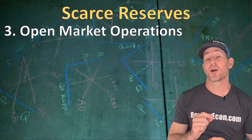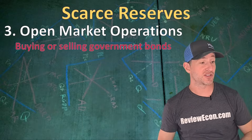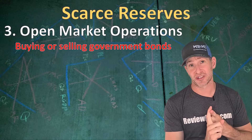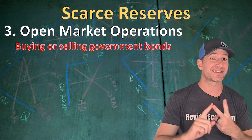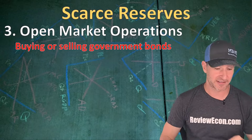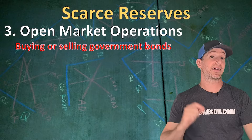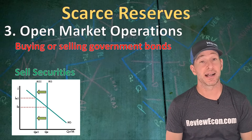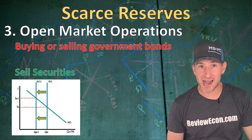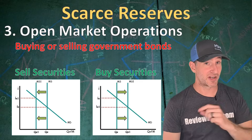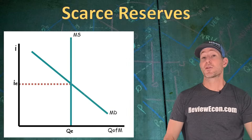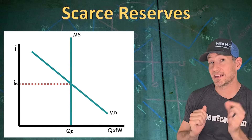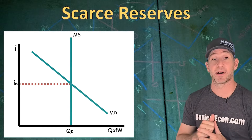Third, we have open market operations — simply buying or selling government bonds or securities. If the central bank sells securities, it makes the money supply smaller; if they buy securities, it makes the money supply bigger. Those are the three tools that can be used to target interest rates within the money market.